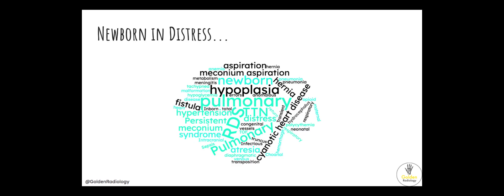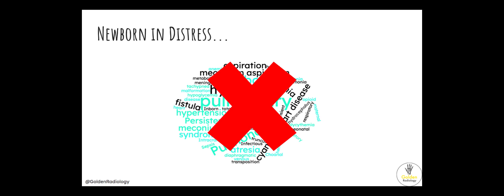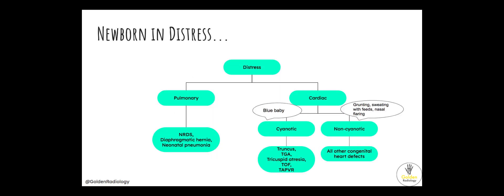When I was taking Step 1, I found the newborn in distress vignette pretty intimidating, since there are so many things that can be wrong. However, thankfully, only a few of them get tested on Step 1. It's helpful to break down the etiologies into cardiac and pulmonary. Once you recognize it's pulmonary, there are only a few things that tend to show up: neonatal respiratory distress syndrome, diaphragmatic hernias, and neonatal pneumonias. For the cardiac half, please check out our upcoming Peds Cardiology video.